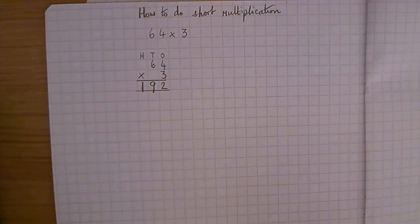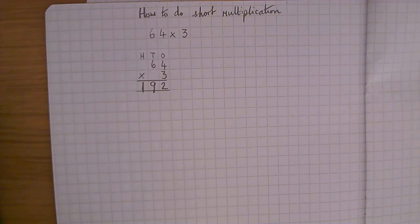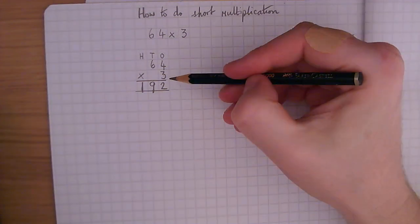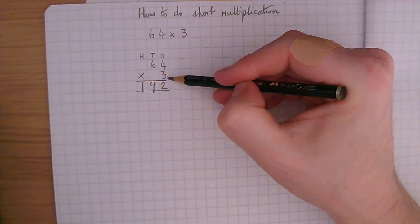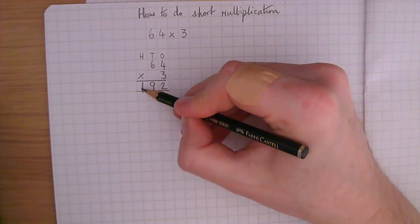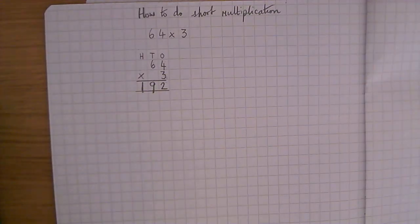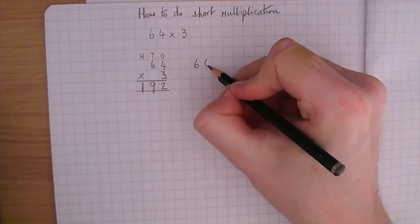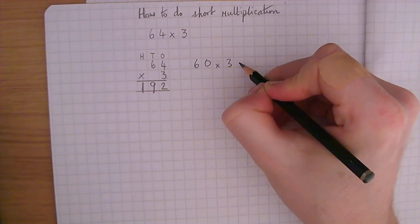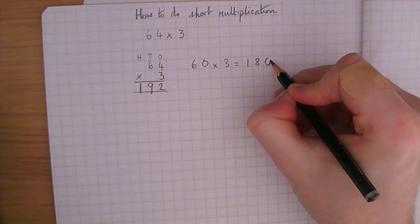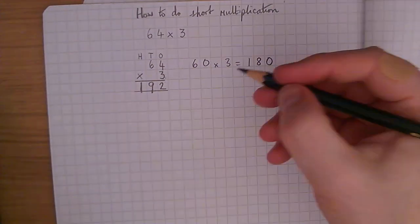Let's look at a different one. However, before we move on, we should check. So let's just do 3 times 4 is 12. 3 times 6 is 18. Add the 1 is 19. Another good way of doing a quick check is to see if it looks approximately correct. We know 64 rounded to 60, and 60 times 3, 6 times 3 is 18. And if we were multiplying that by 10 because it's 60, that would make 180. So it looks correct.